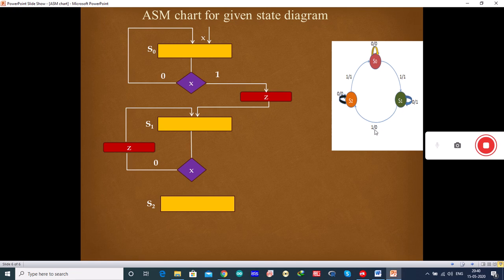And now, when the input is 1 and the output is 0, you need not draw any condition box here. When it is 1, it goes to state S2. This is coming to state S2.